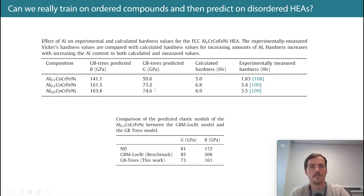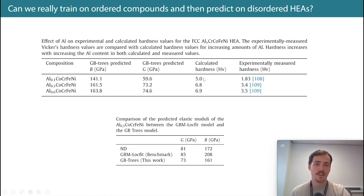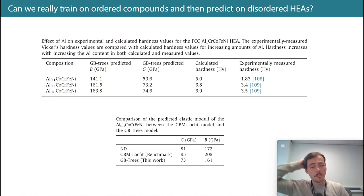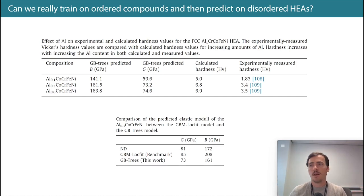With only three data points, and predictions that were quite a bit off from experiment — though the trend was roughly right — they declare victory, which I'm not particularly convinced by. Three data points that are quite a bit off and only an approximate trend is not very compelling. This would have been a really interesting study if they'd looked at performance across many different HEAs, not just this single example. With three data points, you can't really draw meaningful conclusions.